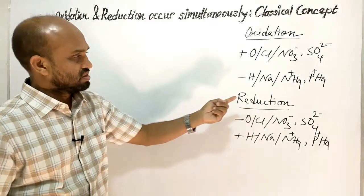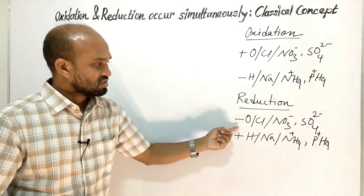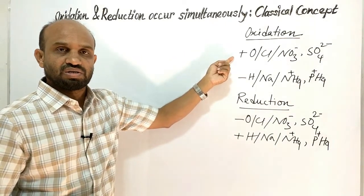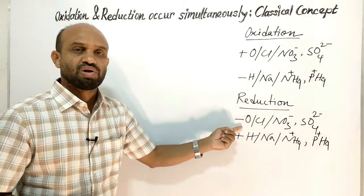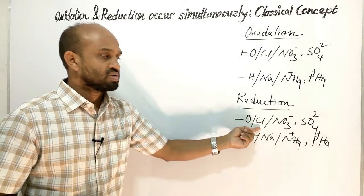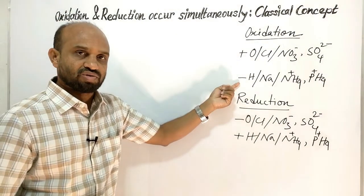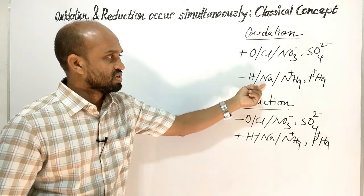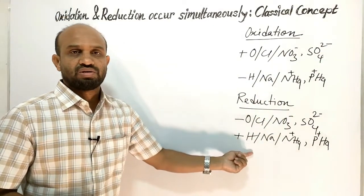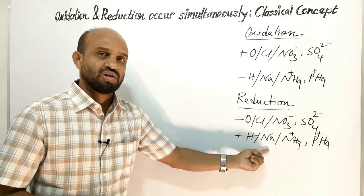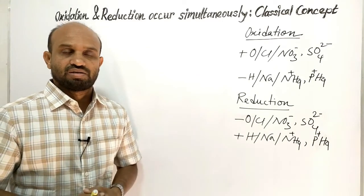Reduction is just the opposite of oxidation — that is, removal of oxygen, or an electronegative element, or an electronegative radical. And reduction is also the addition of hydrogen, or an electropositive element, or an electropositive radical. So this is oxidation and reduction in short.